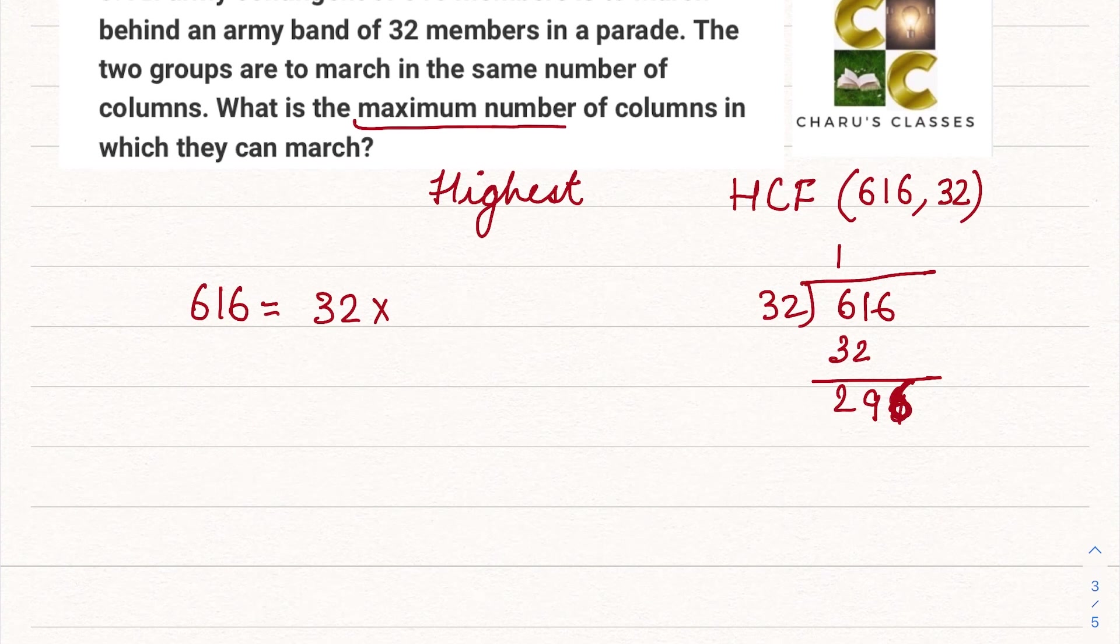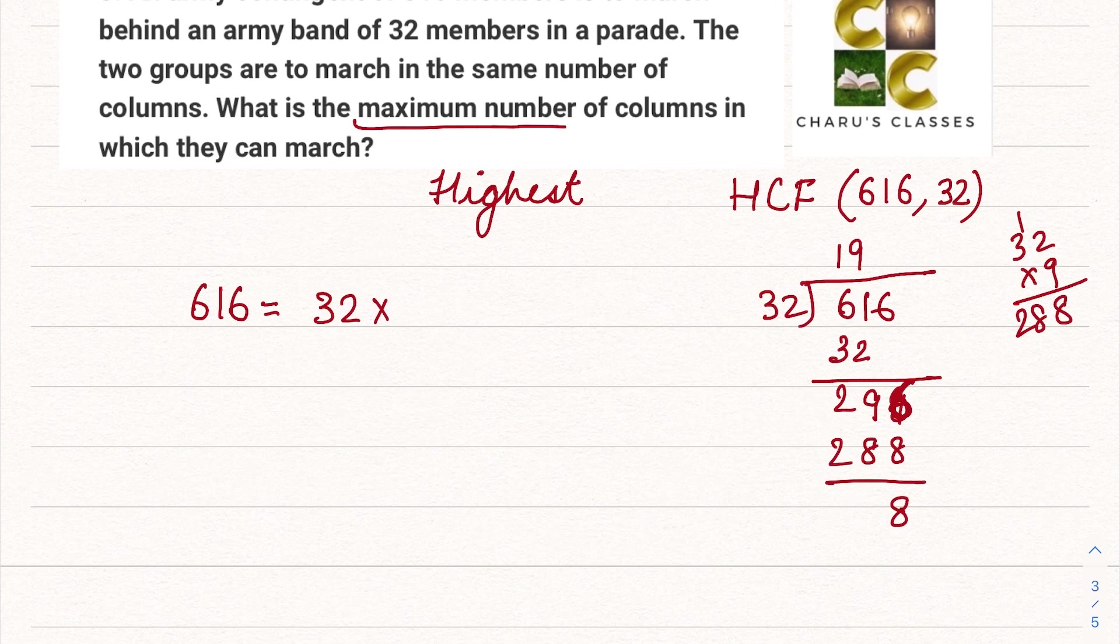So this is coming as 296. Let's check, 32 nines are, 32 tens are 320. I mean 296 is what I need. So I need to check. So 32 nines are 288. The remainder is 8 here.